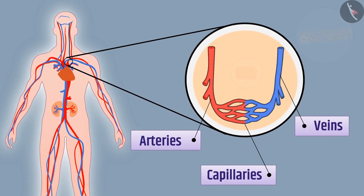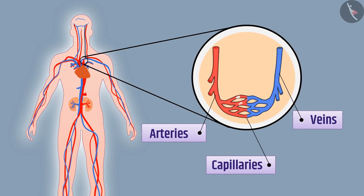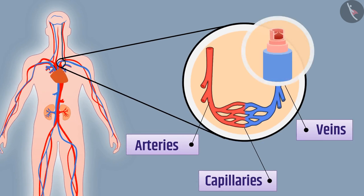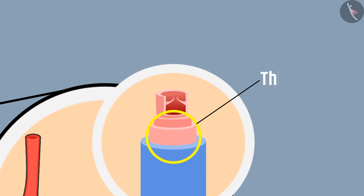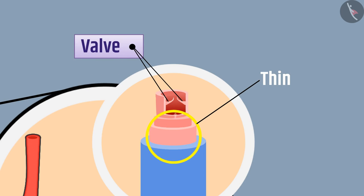Capillaries join together to form veins, which carry deoxygenated blood from various parts of the body back to the heart. The walls of the veins are thin and have valves so that blood flows in one direction only.